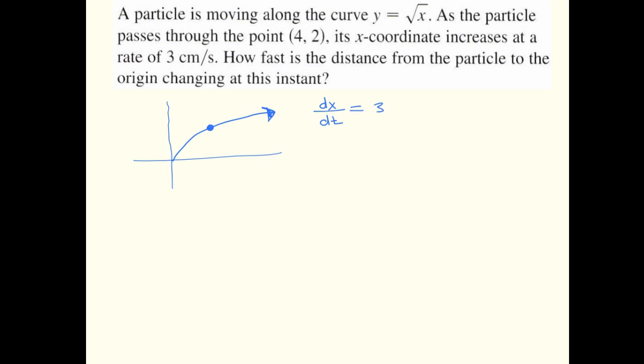So that means we know dx/dt equals 3, and we're asked a question about how fast the distance from the particle to the origin is changing at the instant that it's passing through the point (4, 2). So a couple of things I'll do here.